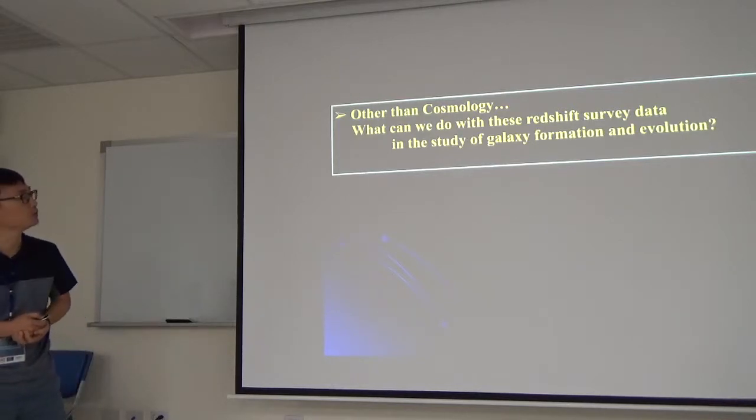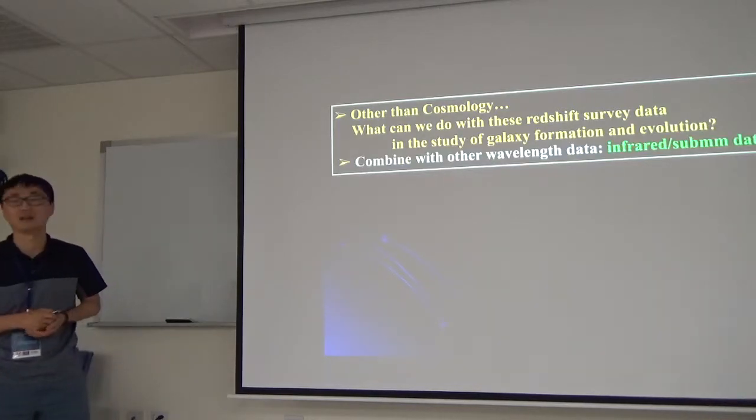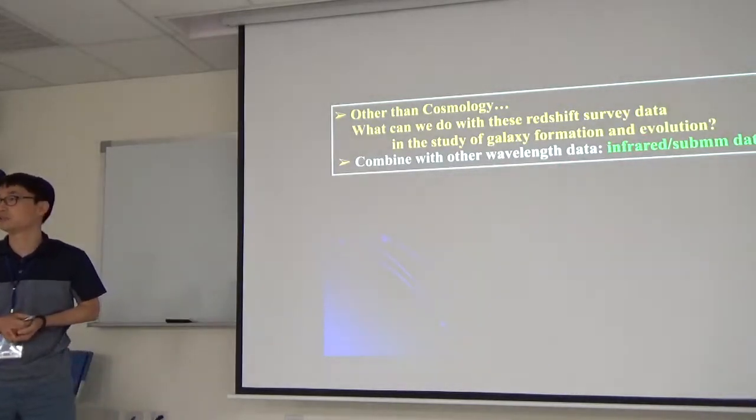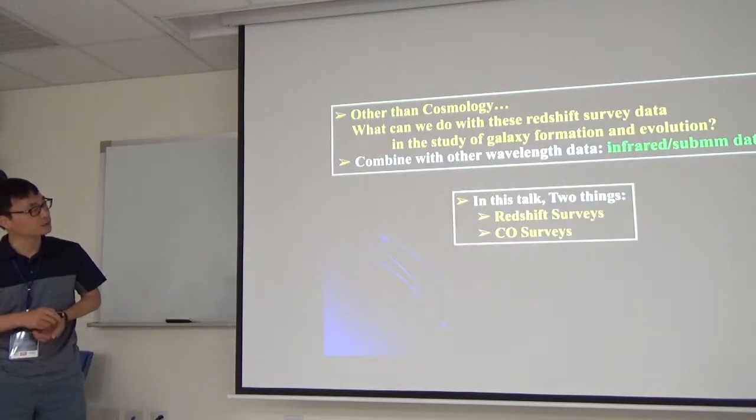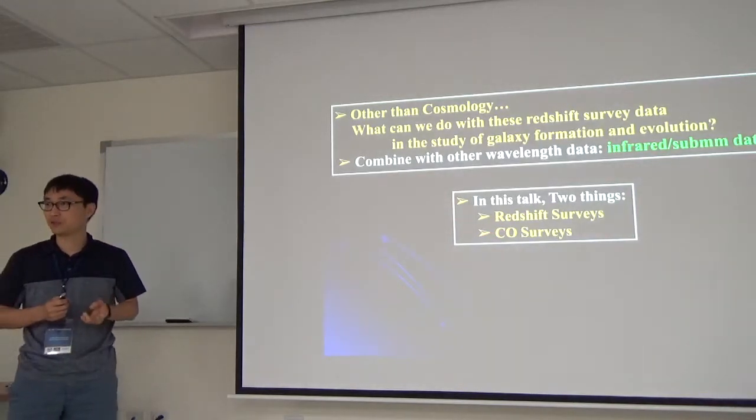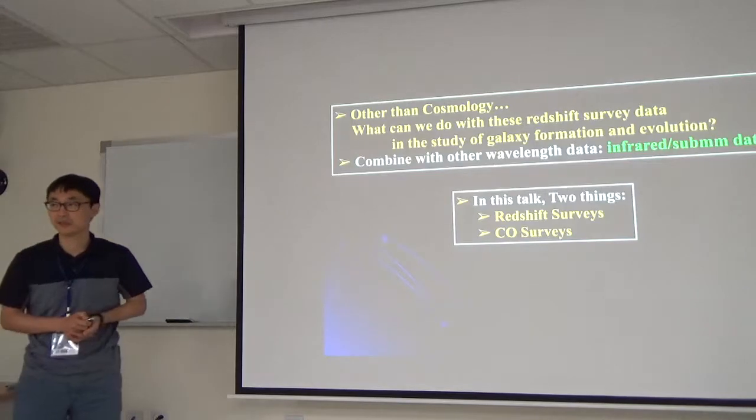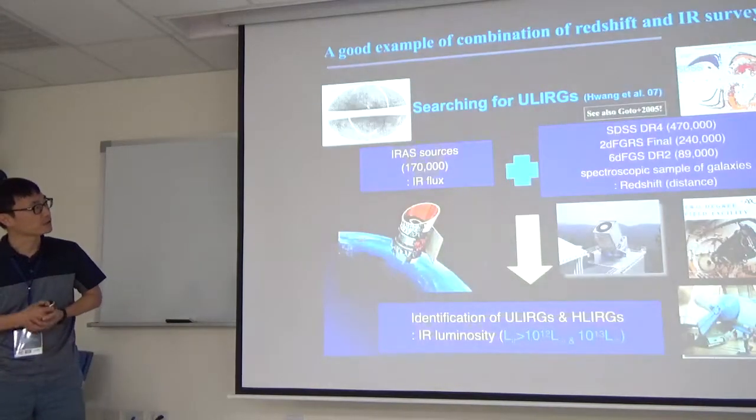One simple way to do is to combine this data with other wavelengths data, including infrared and millimeter to study many things. Today I am going to talk about two things: the first one is the redshift survey and then the CO survey. Let's talk about the redshift survey.